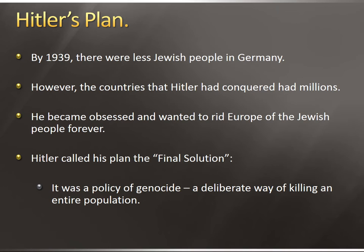By 1939, as we discussed in our last lesson, the plan was to get rid of the Jewish people in Germany, and the Nazis were somewhat successful at this. However, countries Hitler had conquered — like Poland, France, and Czechoslovakia — had millions of Jewish people. Hitler became obsessed with eliminating the Jewish people from all of Europe and called his plan the Final Solution, which was a policy of genocide — a deliberate way of killing an entire population.